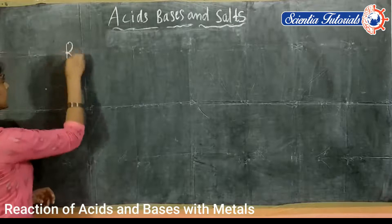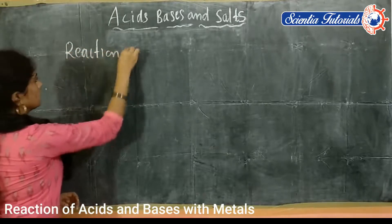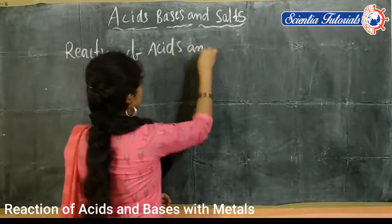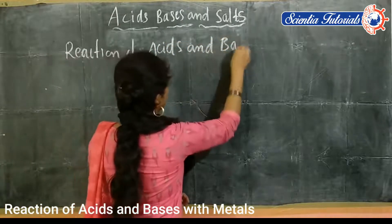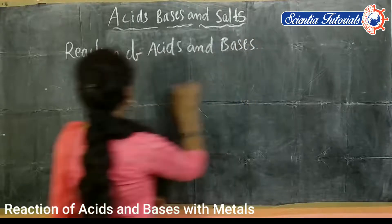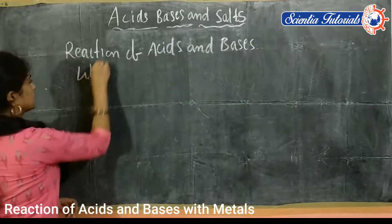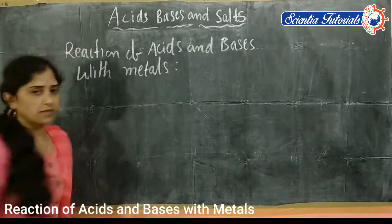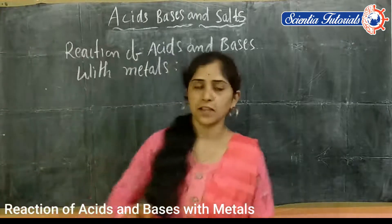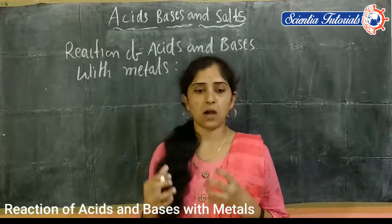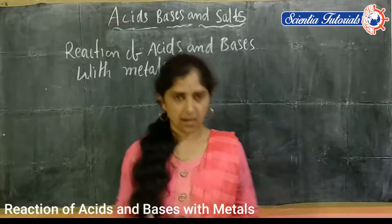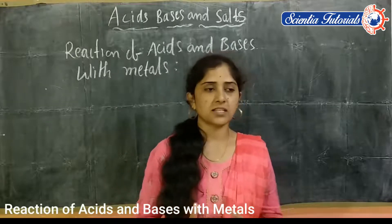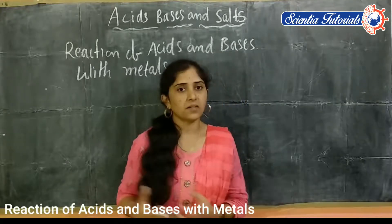Reaction of acids and bases with metals. When acid reacts with metal, or base reacts with metal, what do we obtain in the chemical reaction? What products will we obtain?